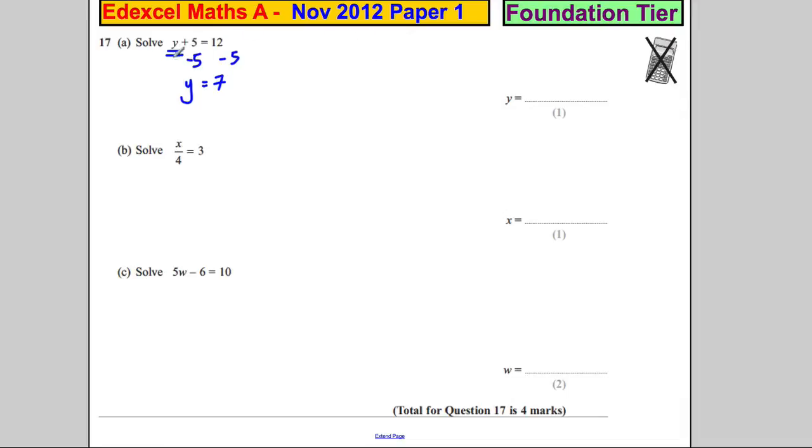So you may look at it as y, you may not like to think of it algebraically. You may like to think something plus 5 equals 12, what is something? Well, something must equal 7.